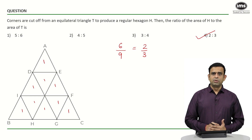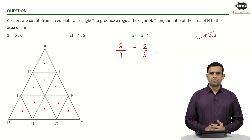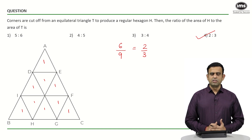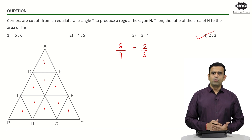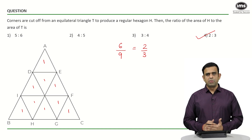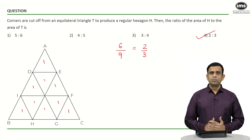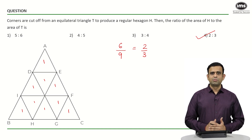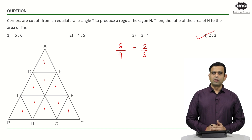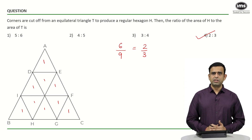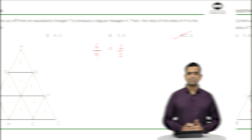Again, the answer is option number 4. This is a fairly straightforward question and both methods lead to the same result of 2/3. Once you have understood the concept, kindly give the replica question a try and put your answer in the comment section.